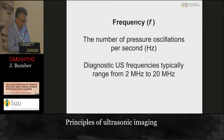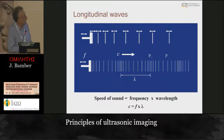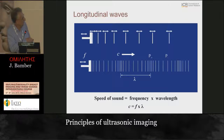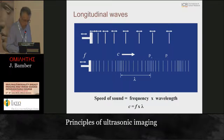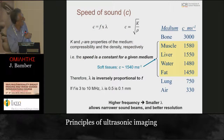One Hertz is one cycle per second, and our diagnostic frequencies for ultrasound are usually in the range of two megahertz up to 20 megahertz. The speed and the frequency are related because speed equals frequency multiplied by wavelength. The wavelength is the distance between any two equivalent points on the wave cycle - for example, the distance between two compression peaks where density is high, or between two rarefaction points where density is low.